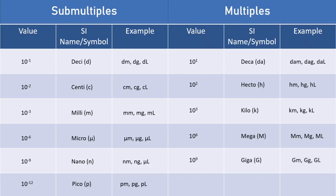Then we have giga, which is 1 billion times the size of the base SI unit, denoted by an uppercase G. And then we have tera, which is 1 trillion times the size of the base SI unit, denoted by an uppercase T. These multiples do go on further, but these are the ones you need to remember for the IMAT. So remember the prefix, the letter that denotes it, and the magnitude associated with each prefix.